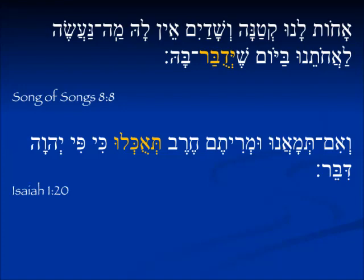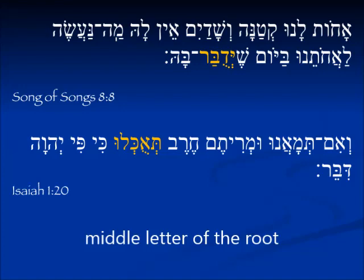In Isaiah, here's an example of second person masculine plural, indicating that the people will be eaten by the sword because Yahweh has spoken — so we have 'teukhalu.' One characteristic worth noting is that in the pi'el and the pu'al, in all forms, there's a dagesh in the middle root letter, and that will become crucial when we begin to look at the hofal.